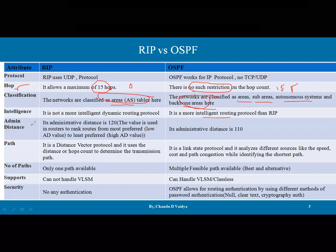The administrative distance of RIP is 120, whereas OSPF is 110. Administrative distance is the value used in a router to rank routes from most preferred to least preferred. A lower administrative distance value means the route is more preferred, and a higher value means it is least preferred.